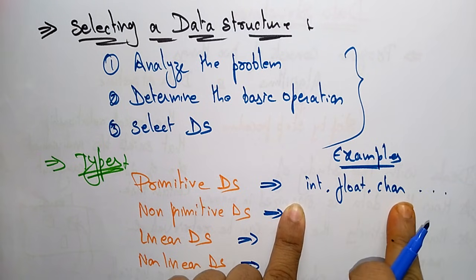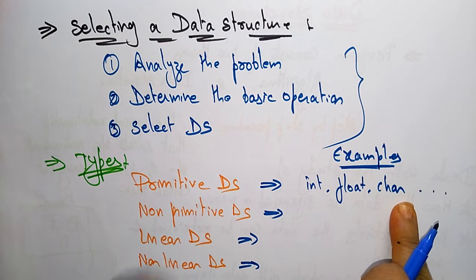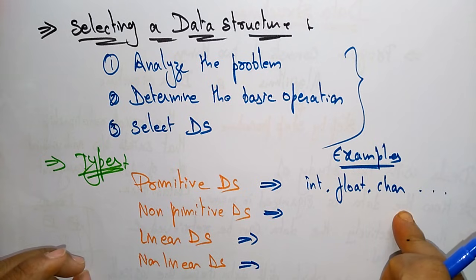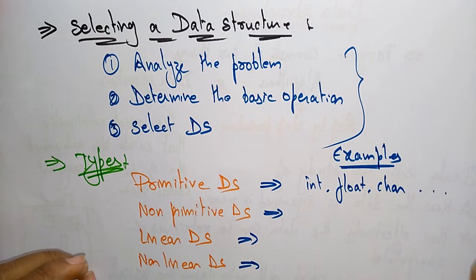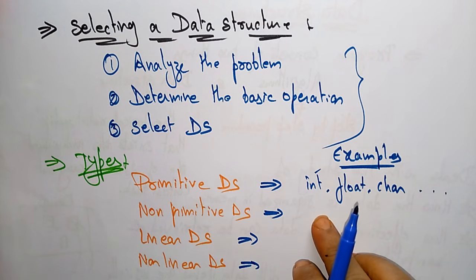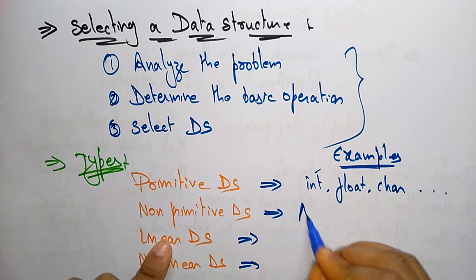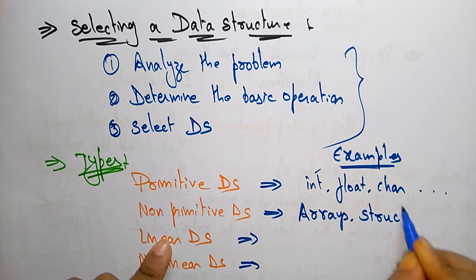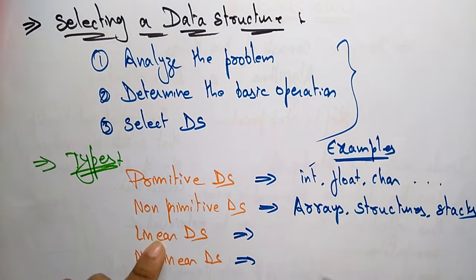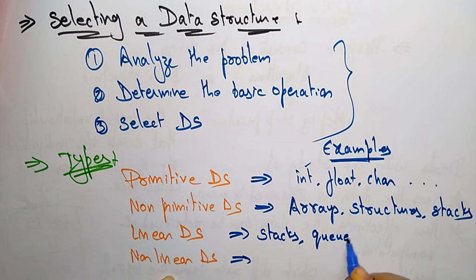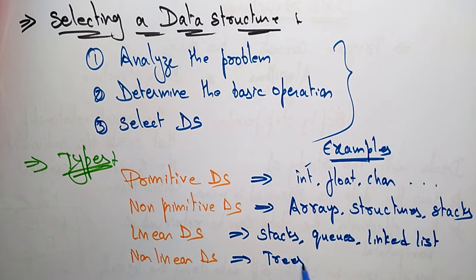Integer, float, and character are called primitive data structures because they store data — each has a capacity for how much data we can store. Non-primitive data structures are arrays, structures, and stacks. Linear data structures include stacks, queues, and linked lists, whereas nonlinear data structures are trees and graphs.